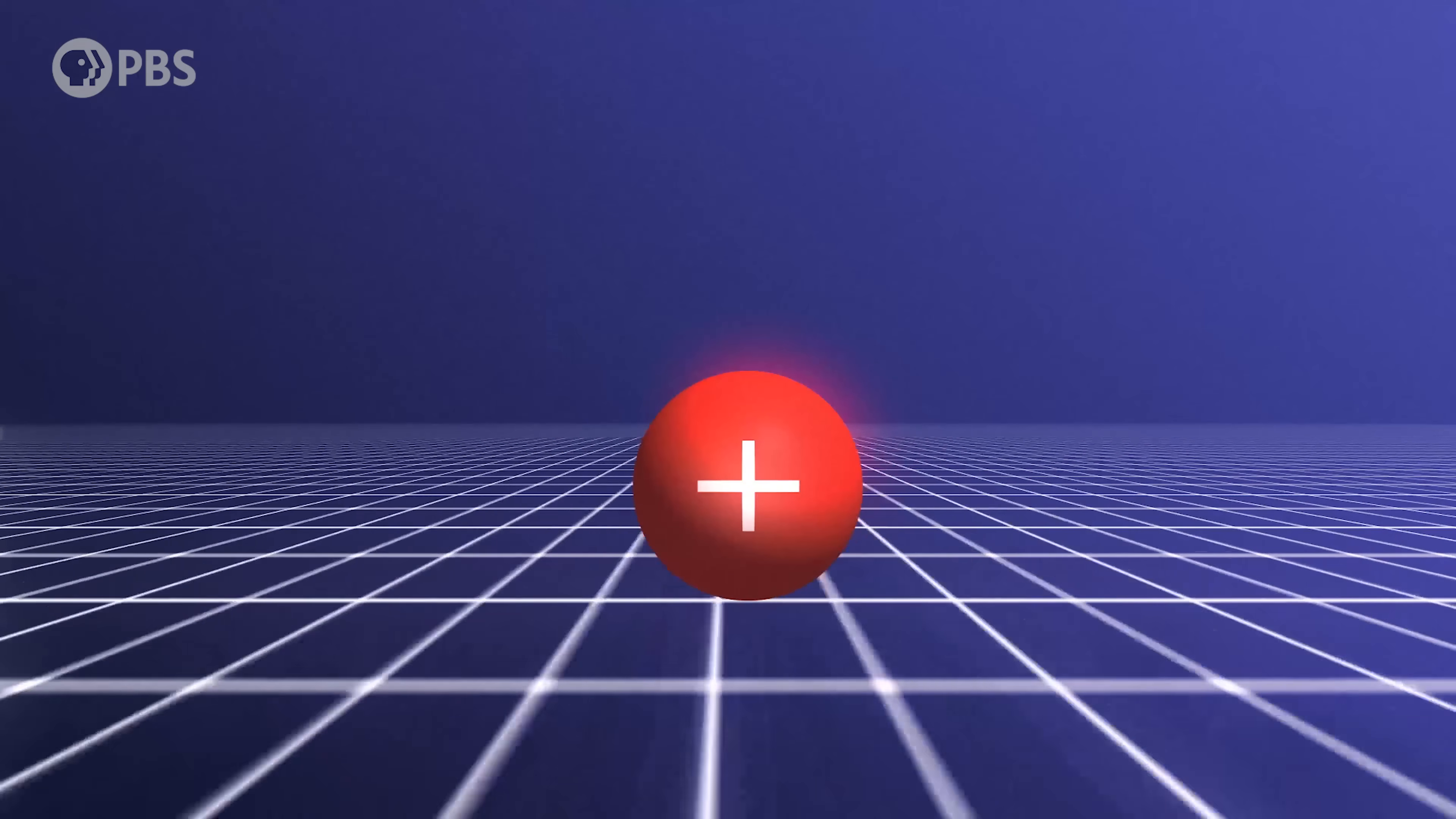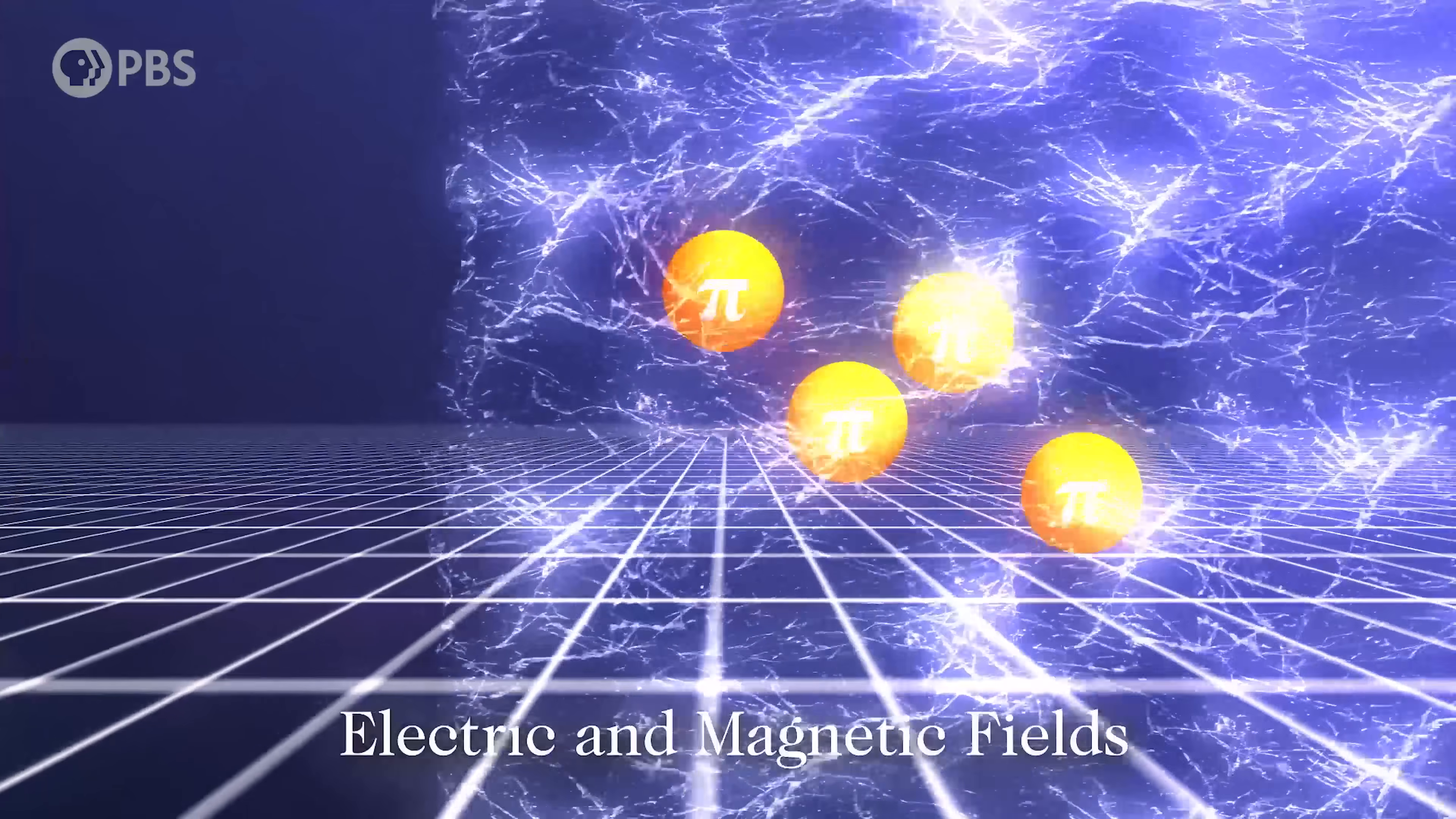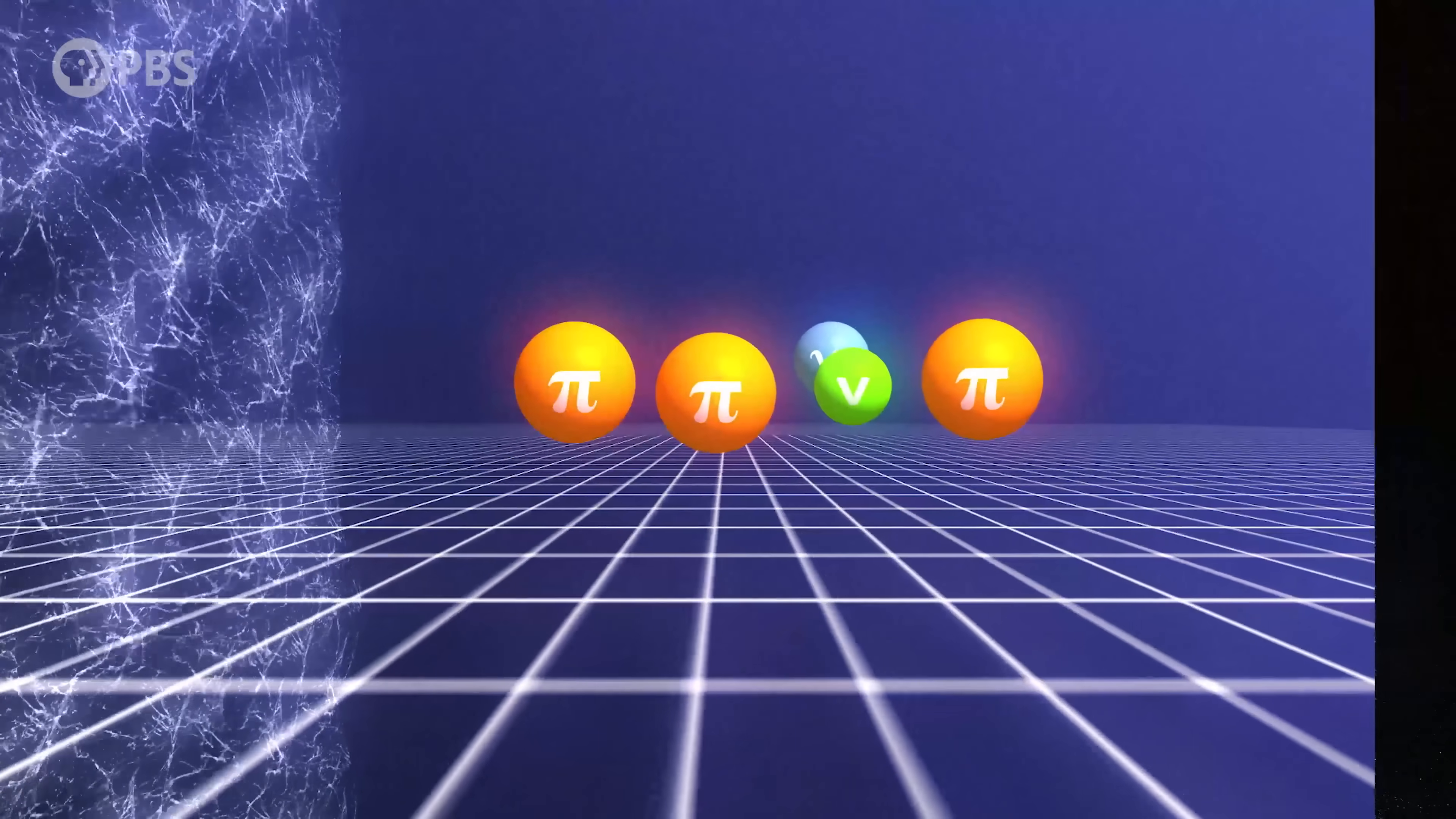Those protons are then smashed into a graphite barrier, and as they collide with nuclei, they produce all sorts of particles. More magnetic fields are used to sort the positively charged pion particles from the debris and focus them into a beam.